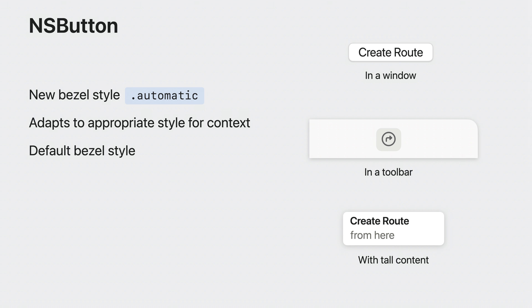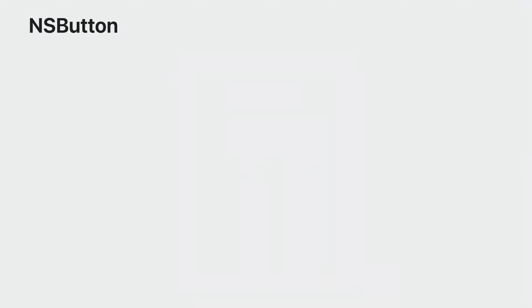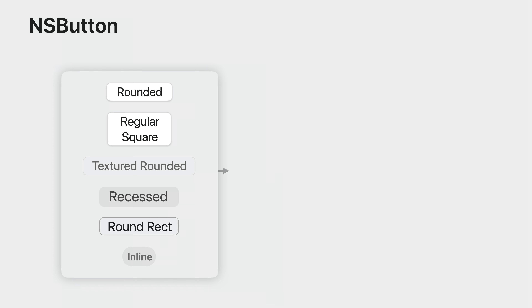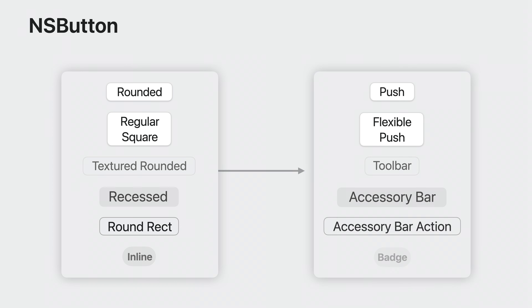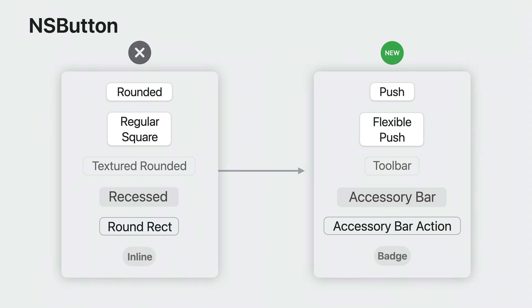The automatic bezel style is now the default bezel style for all button initializers. The existing bezel style names have been updated from descriptions of their appearance to modern names based on their semantic usage. For example, the formerly named recess button is now accessory bar button, indicating this bezel style is most commonly used in accessory bars. Discouraged bezel styles are now deprecated, with deprecations referring to alternative bezel styles with clear semantic usage.